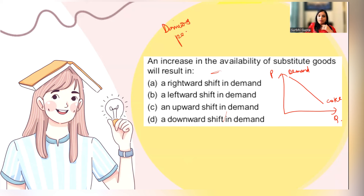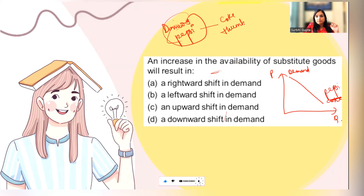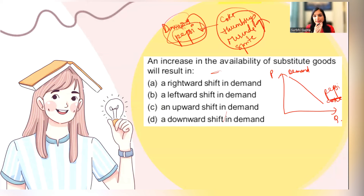Suppose you go to Domino's for pizza. Most people want a soft drink with pizza. Domino's has a tie-up with Pepsi, so people have to take Pepsi. But if Domino's starts keeping Thumbs Up, Mirinda, and Sprite as well, the availability of substitute goods increases. So Pepsi's demand will decrease, because I personally prefer Thumbs Up or Coke over Pepsi, and now I have that choice.